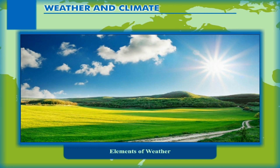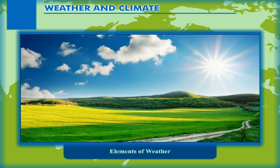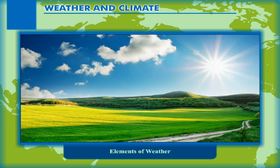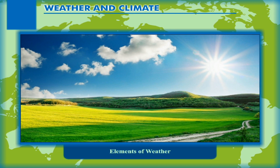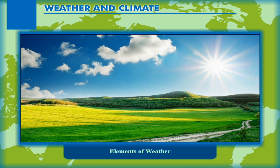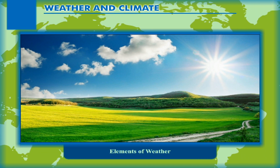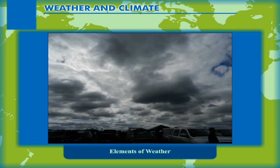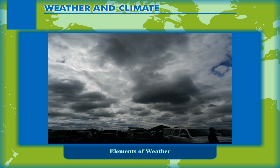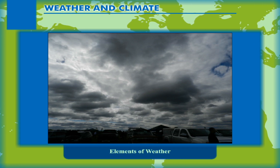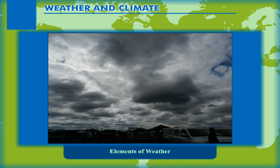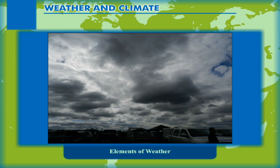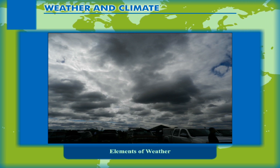Thus, weather is defined as the atmospheric conditions in relation to temperature, humidity, sunshine, cloudiness, pressure, etc., that change very frequently. As compared to climate, changes in weather conditions occur over a small area and for a smaller duration of time, and these are not as certain as the climatic or seasonal variations.